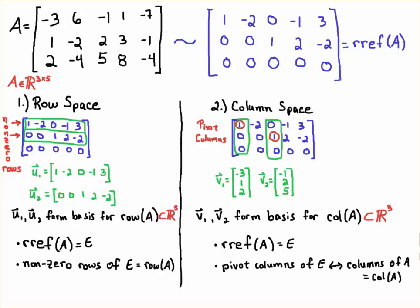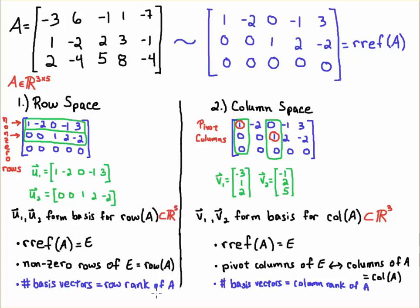Notice that in both cases, the number of basis vectors gives you the row rank of A and the column rank of A. In both cases, the row rank of A is two and the column rank of A is two. There is a theorem — you can look it up in your linear algebra text — that tells you the row rank is equal to the column rank, and we call that the rank of A.